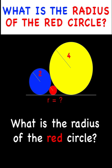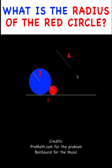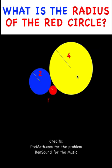Hi everyone, here is our math problem for today. We are given a yellow circle with a radius of 4 units, and another blue circle with a radius of 2 units, and a third circle — this red circle — with a radius of R units. These three circles are tangent to each other, and all of them are also tangent to this external white line. We want to find what is the radius of this red circle.